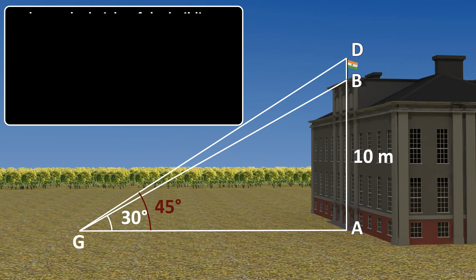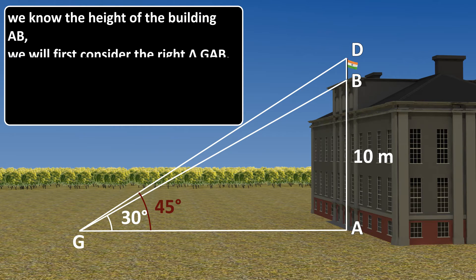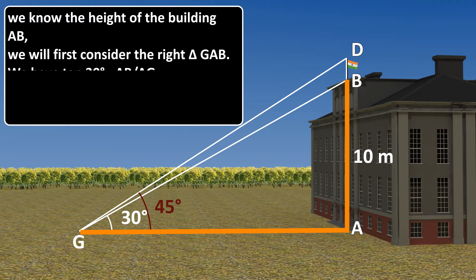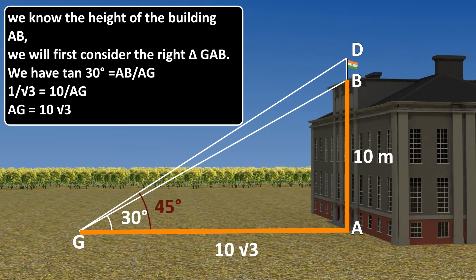We know the height of the building AB. We will first consider the right triangle GAB. We have tan 30 degrees is equal to AB by AG. 1 by square root 3 is equal to 10 by AG. Therefore, AG is equal to 10 square root 3.